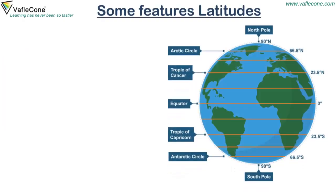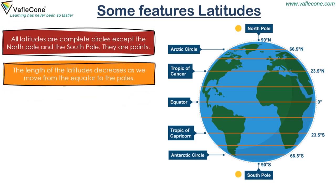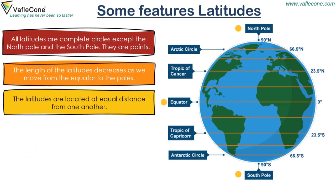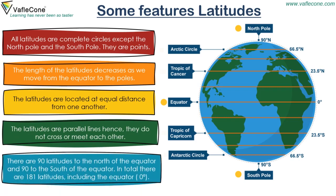Some features of latitudes: all latitudes are complete circles except the north pole and the south pole, which are points. The length of the latitudes decreases as we move from the equator to the poles. The latitudes are located at equal distances from one another. The latitudes are parallel lines, hence they do not cross or meet each other. There are 90 latitudes to the north of the equator and 90 to the south, making a total of 181 latitudes including the equator.